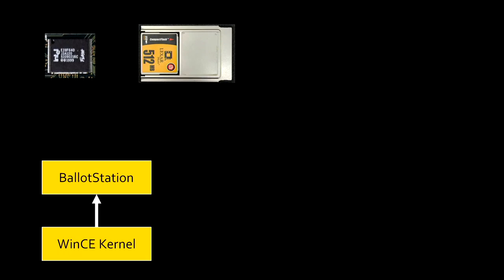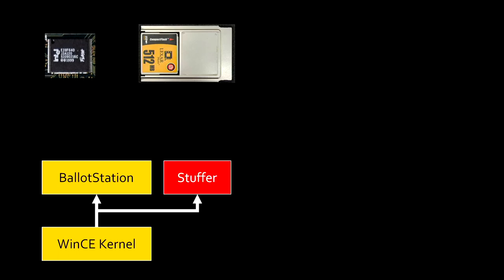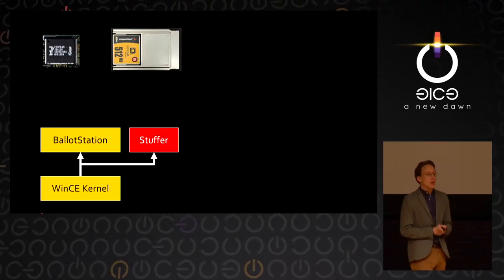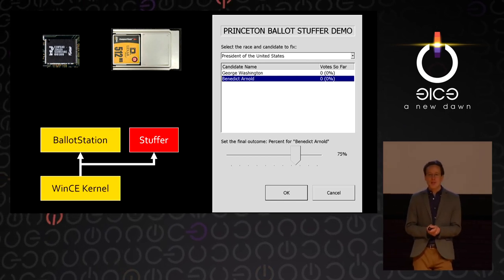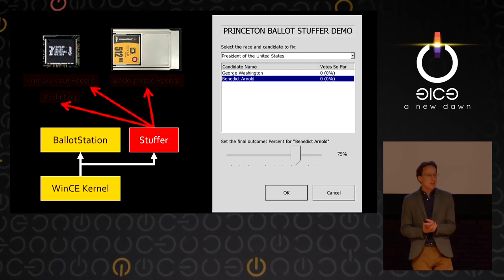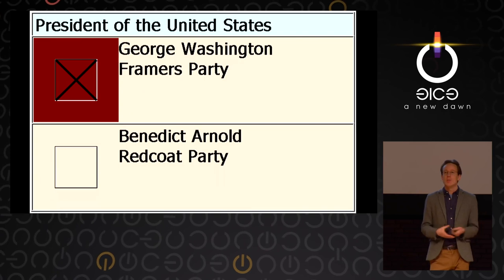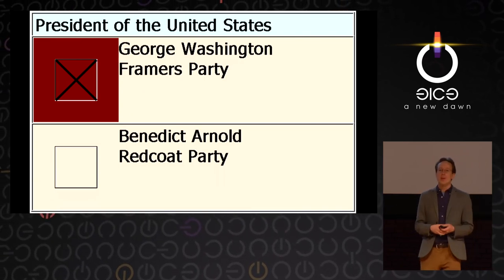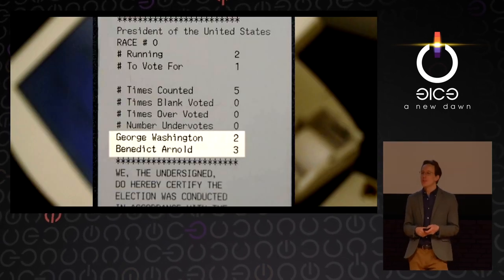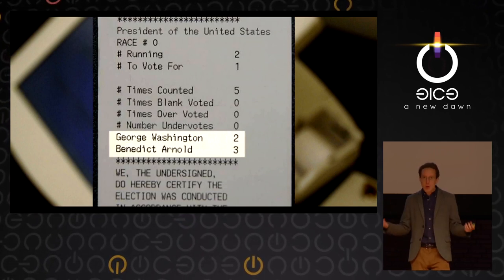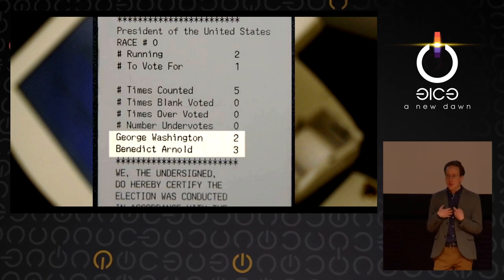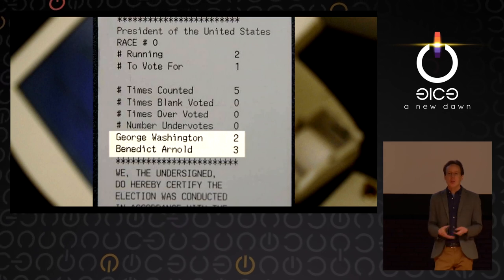It turned out to be a normal operating system kernel and an application that read and totaled votes. By doing some things with the memory card, you could cause the machine to replace its software without any cryptographic checks with whatever software you wanted. We came up with an application called the 'stuffer' that presented a nice UI on the touch screen, let you pick who you wanted to vote for and by how much, then changed every record of the vote in electronic memory. We could have an election between George Washington and Benedict Arnold, and Benedict Arnold would always win. This is so easy that even naive grad students could pull it off in a few weeks.